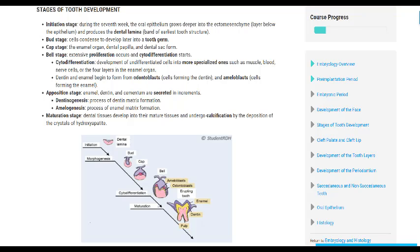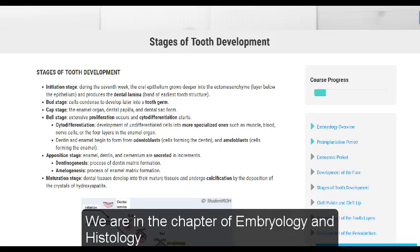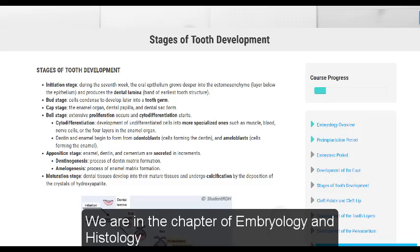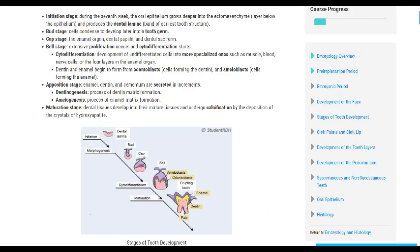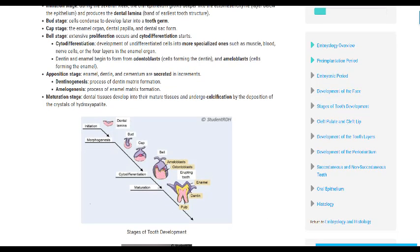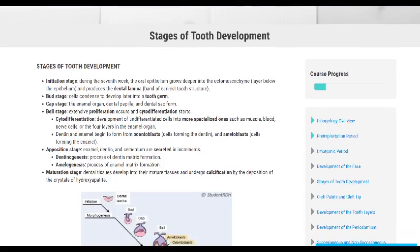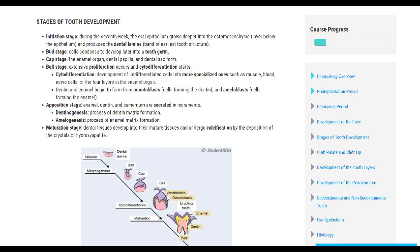This is the Student RDH website. I just want to quickly show you that we are in the chapter of embryology and histology. I've already done two chapters, this is just a demo account, but I'm going to jump right into what's called the stages of tooth development - the bud, cap, bell stage. You probably remember this but don't really remember what they were about and get confused about whether it's bell stage, bud stage, then cytodifferentiation starts.